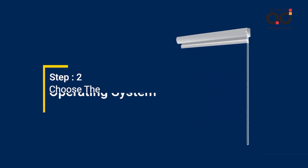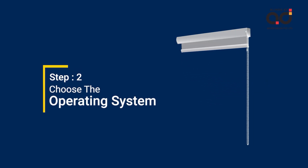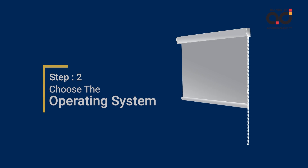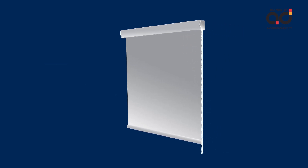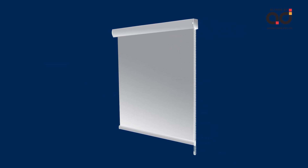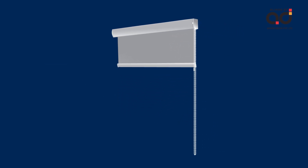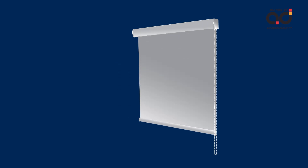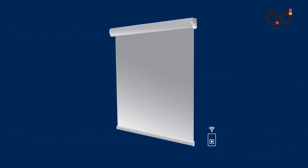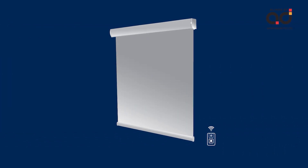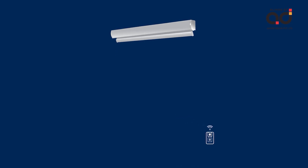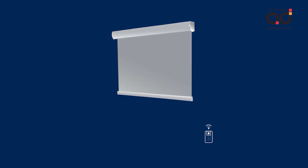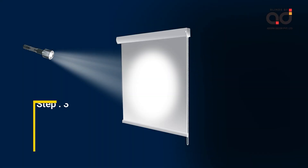In step 2, choosing the operating system: the typical operating systems are the manual operating system, which functions with a cord or chain, and the motorized operating system, which can be operated by a remote control or mobile app.